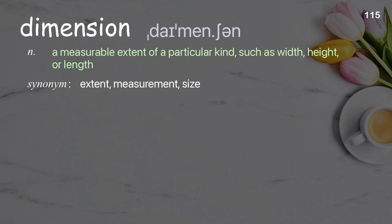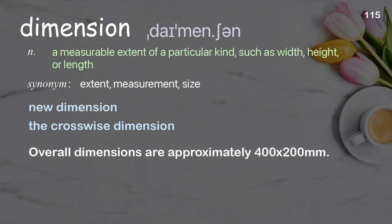Dimension. A measurable extent of a particular kind, such as width, height, or length. Examples: new dimension, the crosswise dimension. Overall dimensions are approximately 400 by 200 millimeters.